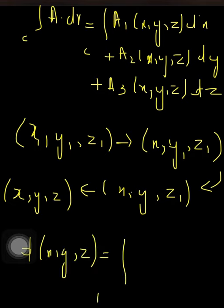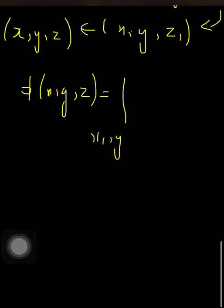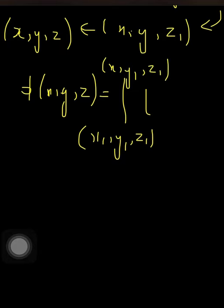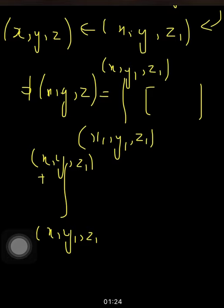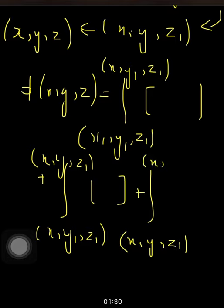So I define φ(x, y, z) as the sum of three integrals: from (x1, y1, z1) to (x, y1, z1), plus from (x, y1, z1) to (x, y, z1), plus from (x, y, z1) to (x, y, z). This is equation one.